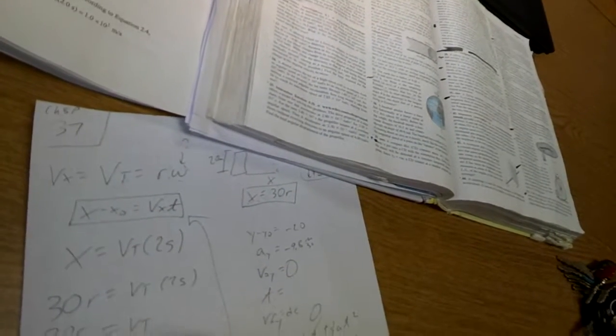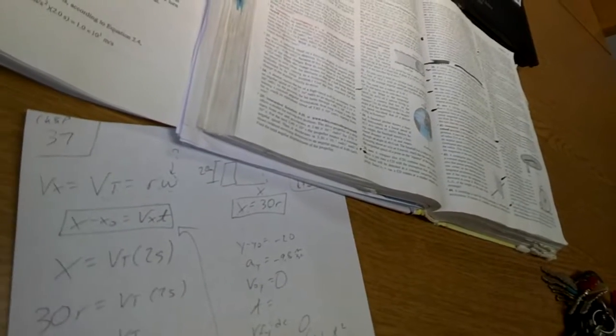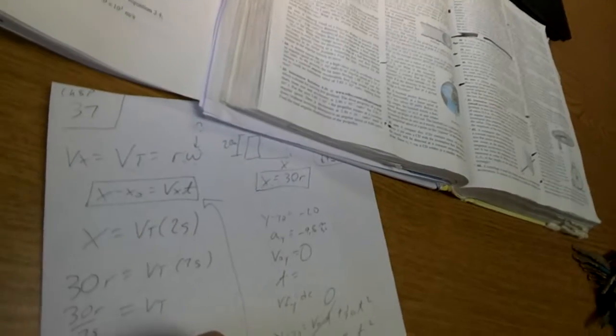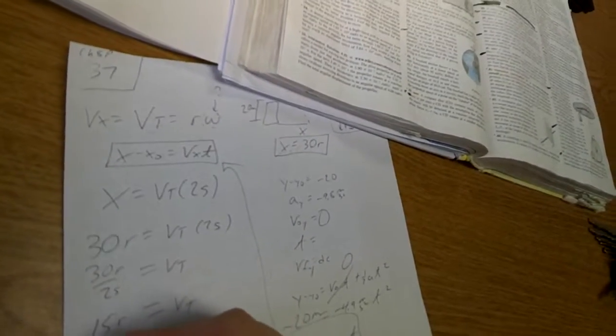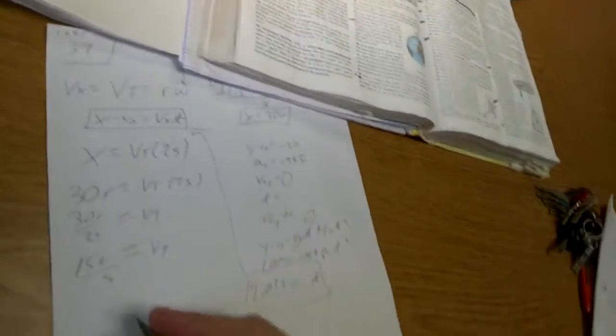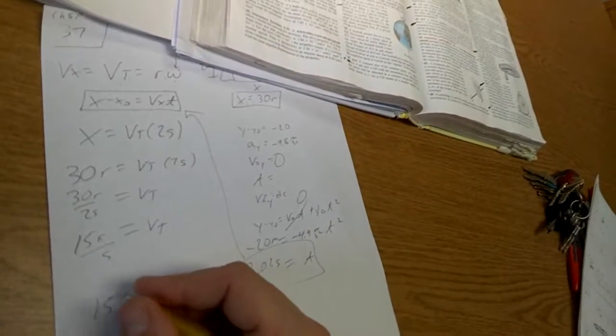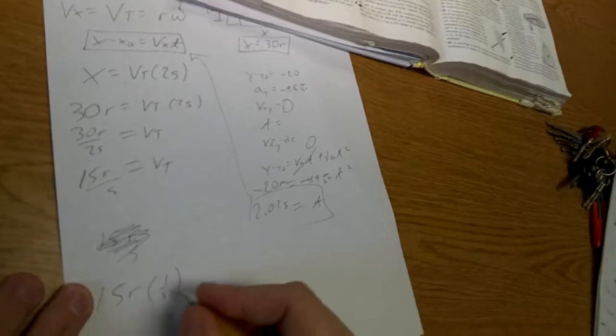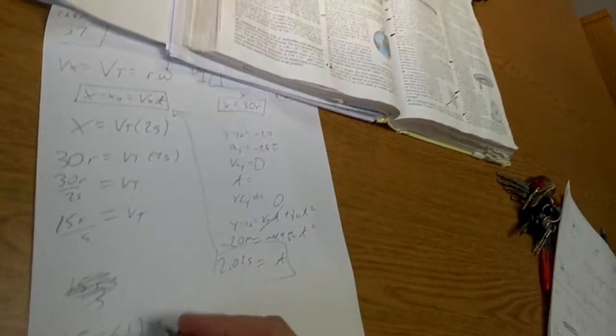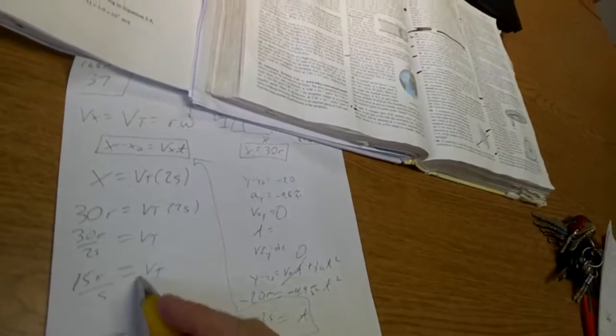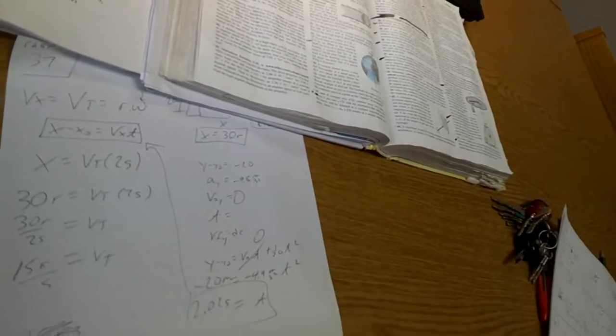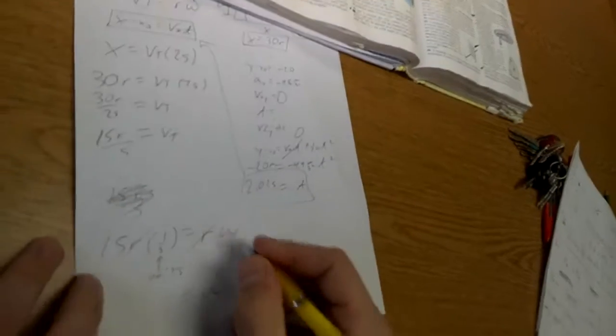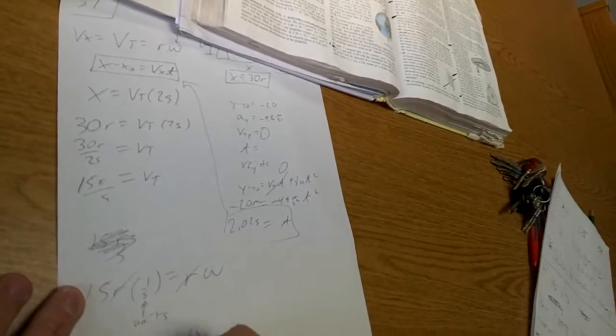So 30r equals vt times 2, and solve for vt. I'm going to get 30r over 2. So my vt is 15r, and the units are s to the negative 1, or over seconds. It might be a little weird-looking, but that's because r has units of meters, so this will end up being meters per second. Plug that back into my original equation, and I think we're home free. So we'll have 15 times r, that equals r times omega, and lo and behold, the r's cancel out. The units make sense now. We have omega equals, we're in radians, 15 radians per second.